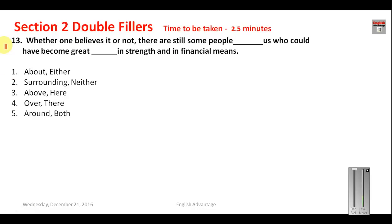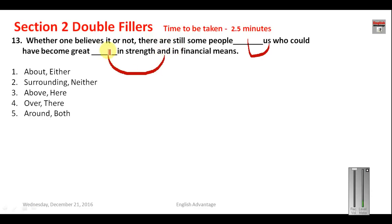Question number thirteen: 'Whether one believes it or not, there are still some people __ us who could have become great in strength and in financial means.' Before the word 'us' you can correctly fill option five — 'around'. Some people around us. The word 'and' here can be combined with 'both' — 'both in strength and in financial means' — as part of the correlative conjunction pair 'both...and'. Your answer will be 5.